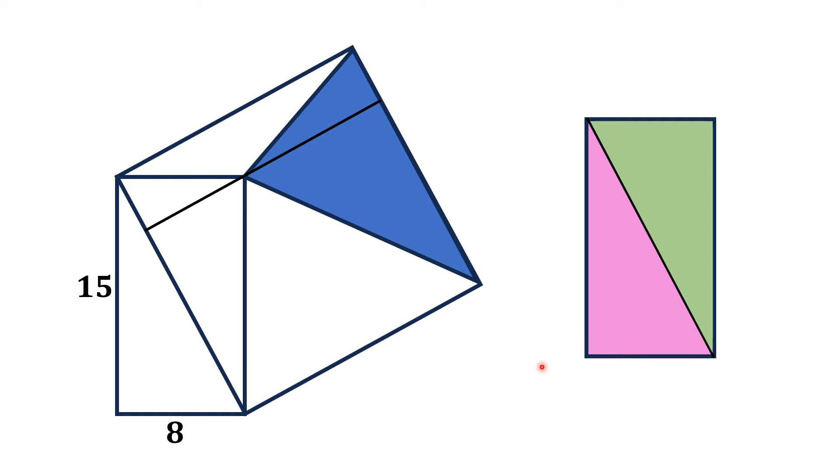Now, let me draw a line segment parallel to this side of the square and another line segment parallel to this side of the square, passing through the point of contact of the rectangle and blue shaded triangle.